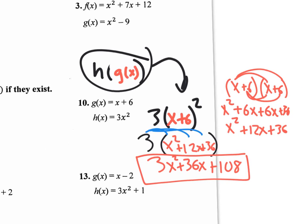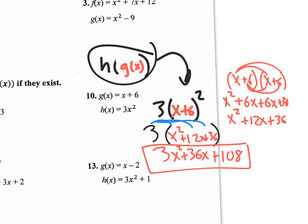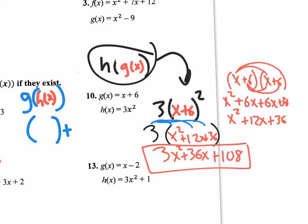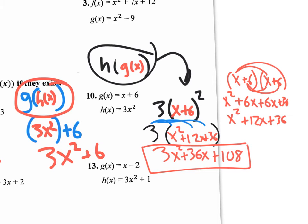That's one way of doing it — h of g of x. They also want you to do g of h of x. So we plug the g into the h, now they want us to plug the h into the g. The notation is g of h of x. So the g of x is x plus 6, so you'd have parenthesis plus 6, and what we're plugging into the g of x function is the h of x function, which is 3x squared. I'm going to plug in 3x squared right in there, and now I do the math. There is no math to do — no distributive property, no combining like terms. So the answer is 3x squared plus 6. That's the answer to g of h of x.